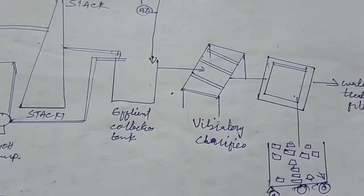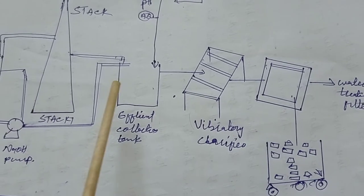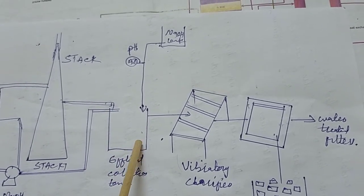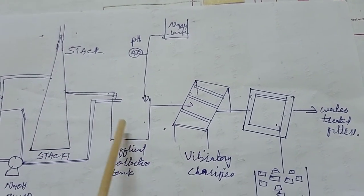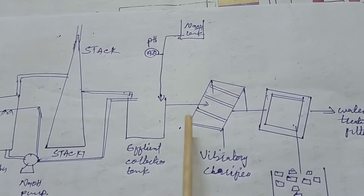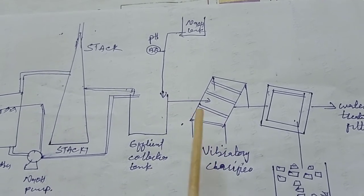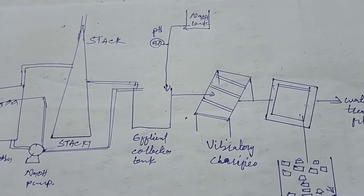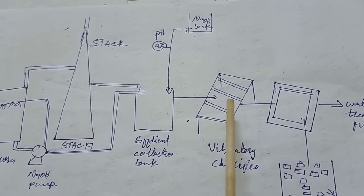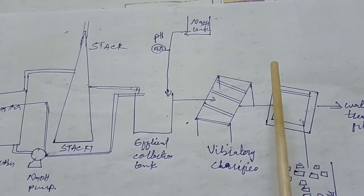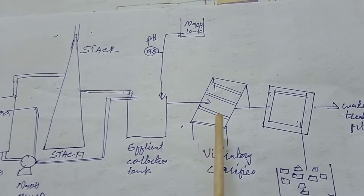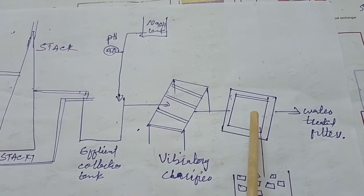Now let's go to water pollution. The effluent is generated, but if we release it on land or in a water body it is very harmful and will contaminate those water bodies. For safe environment management, we send it to effluent treatment. In the effluent collection tank, a pH analyzer checks continuously. If pH is too acidic, NaOH is added to neutralize. This neutralized solution with the help of a pump goes to the vibratory classifier, where vibration from a VFD motor separates the liquid from the solid.